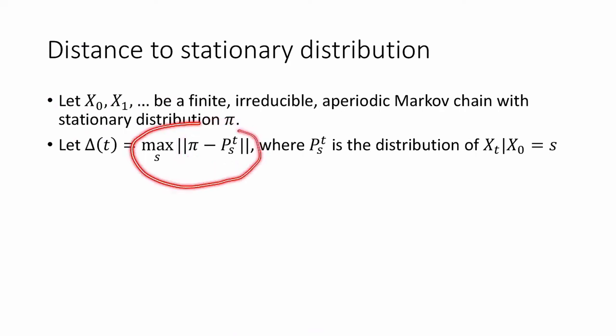And this is kind of the worst possible distance. The biggest possible distance is when I maximize over all possible starting points, and that's going to give me Δ(t).